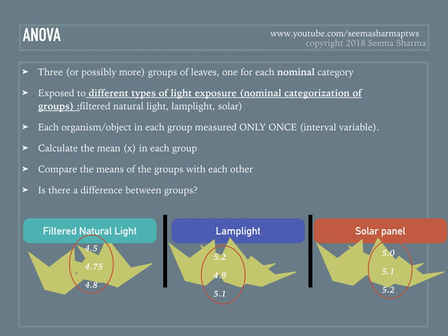ANOVA, or Analysis of Variance, allows you to have three or possibly more groups of leaves, each group corresponding to a nominal category. The nominal variable is light exposure, and the categories are filtered natural light, lamp light, and solar light. Just like in the independent t-test, each organism or object is measured only once, giving us our interval dependent variable. You calculate the means for each group, compare those means with each other, and accept or reject the appropriate hypothesis as outlined for the continuous data tests.